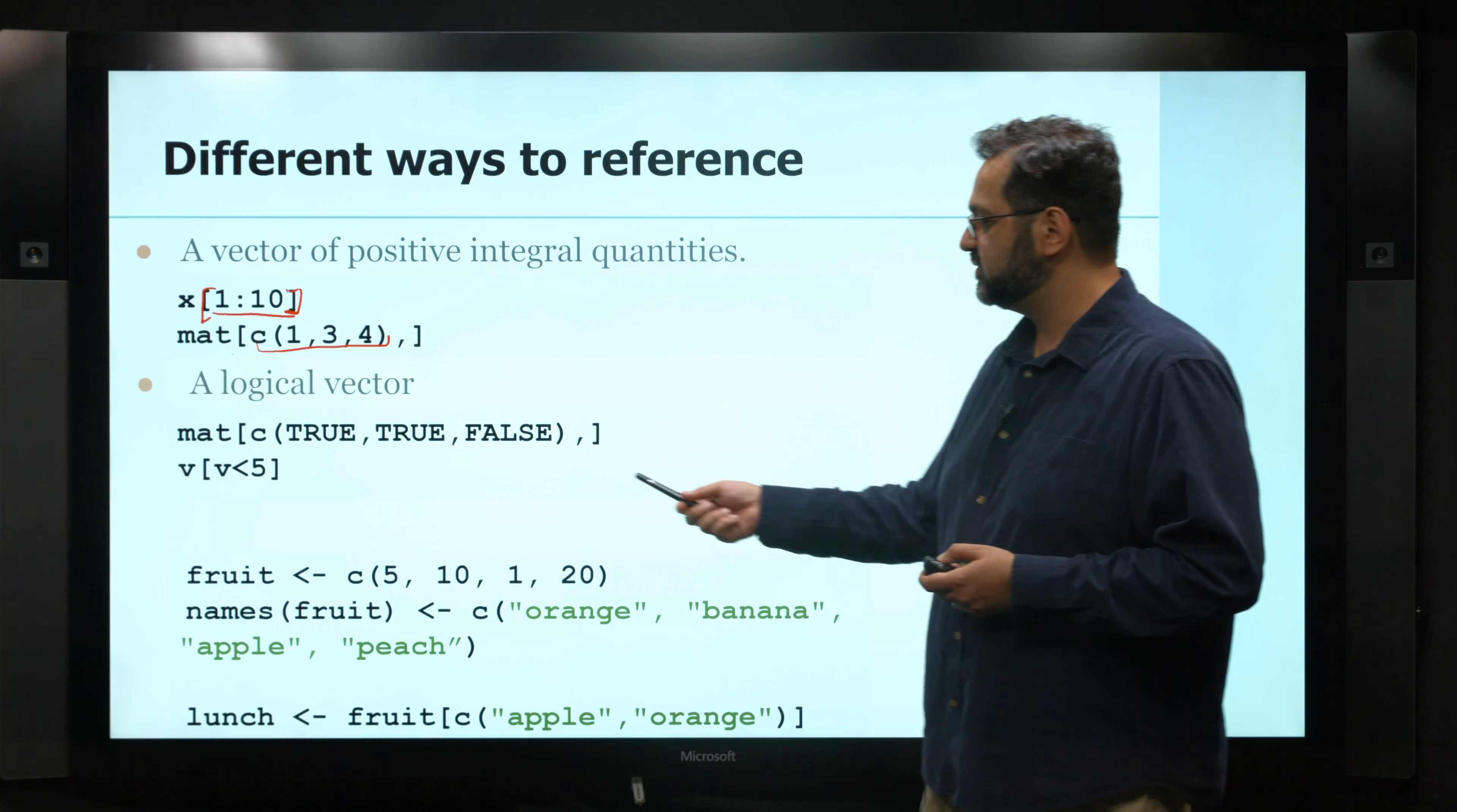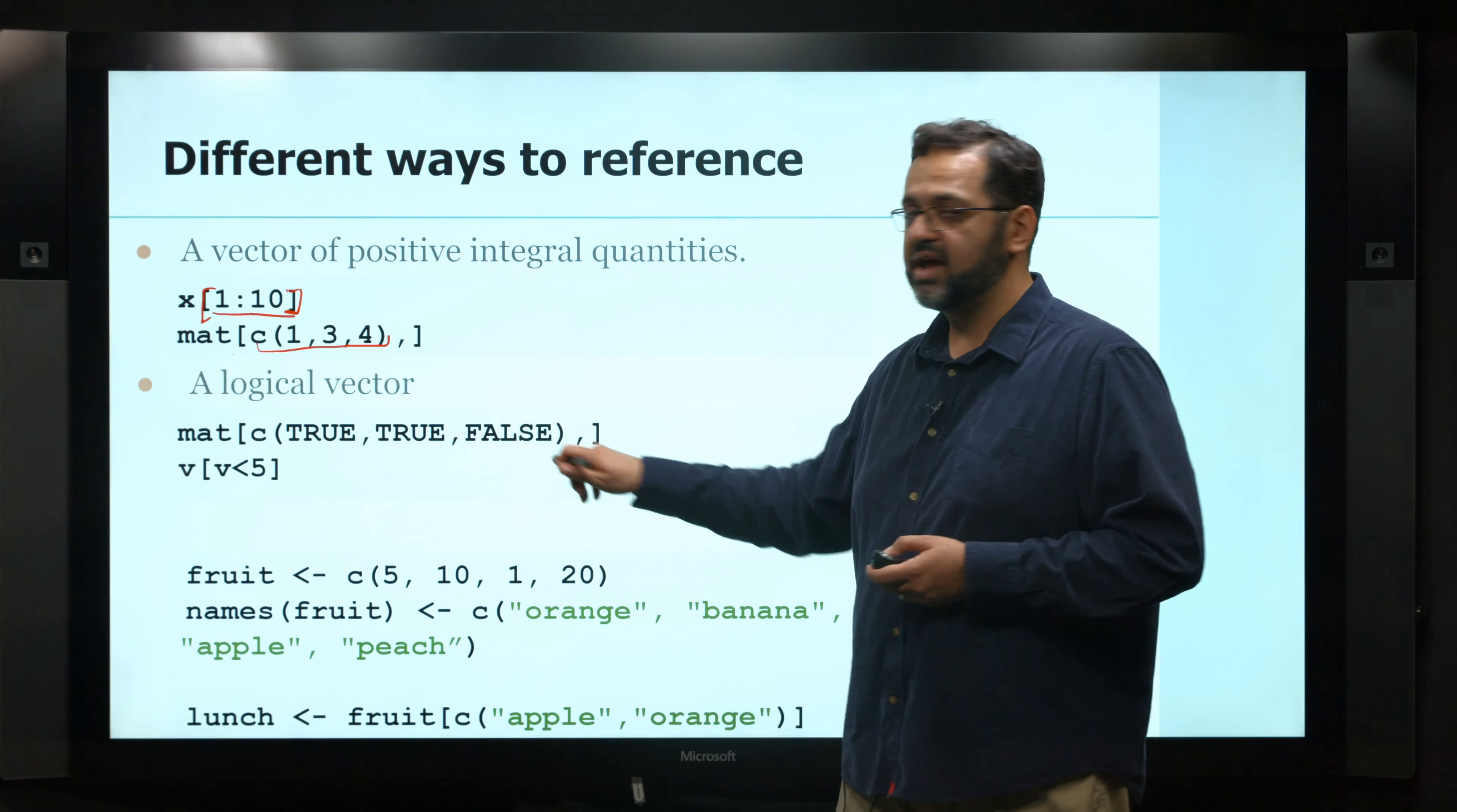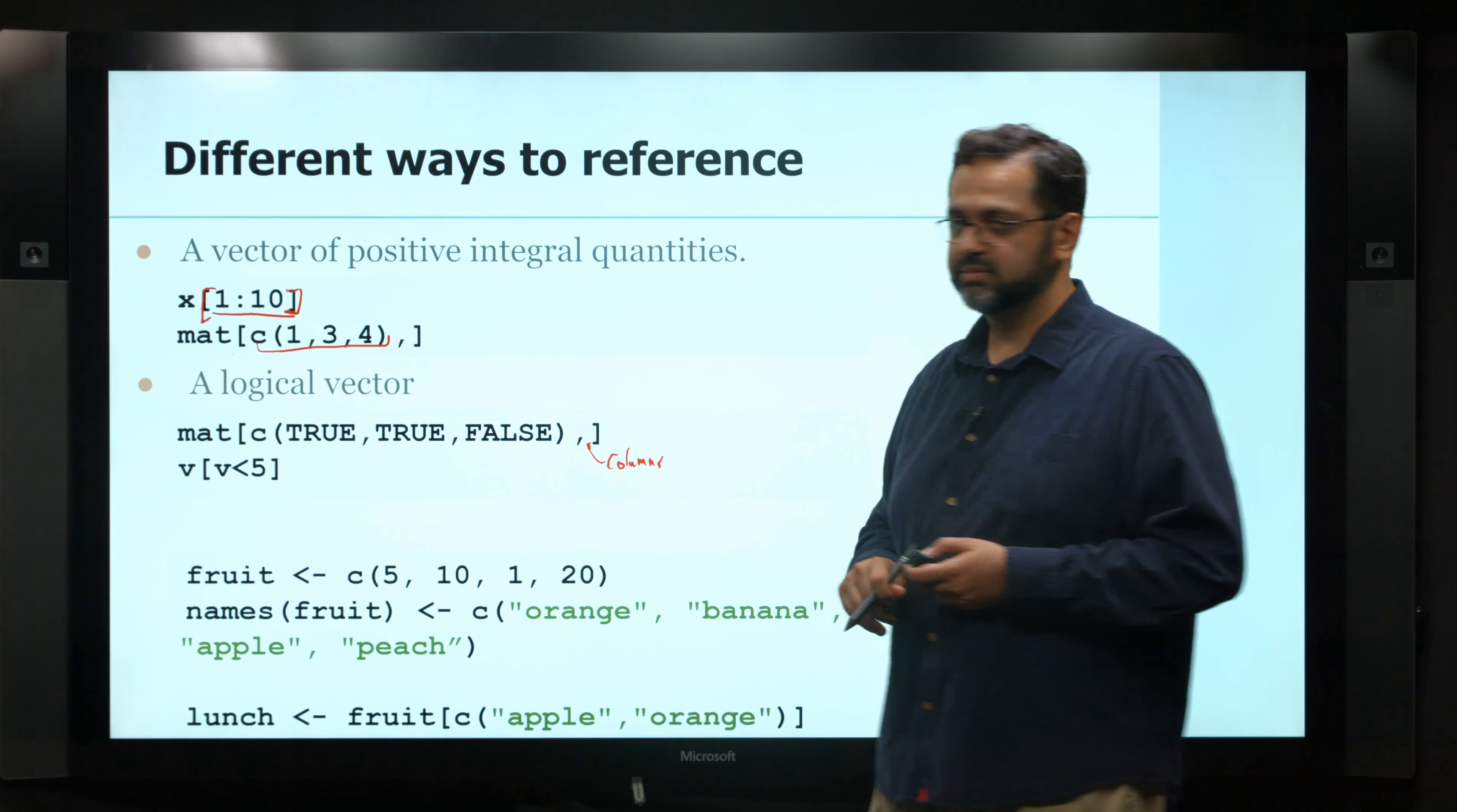You can also do this by providing a logical vector. So in this case, this says I have three rows. Give me the first and second one, but not the third one. But again, leaving out the last value here for columns, this means give me all the columns.